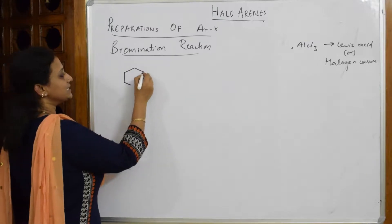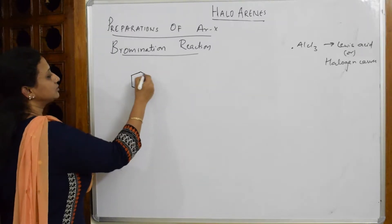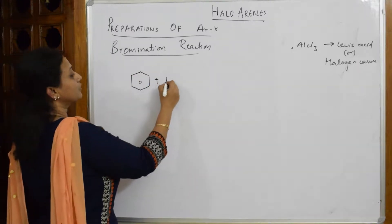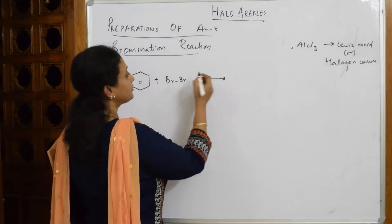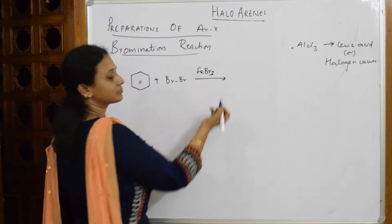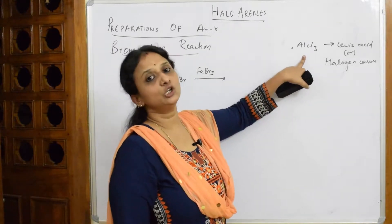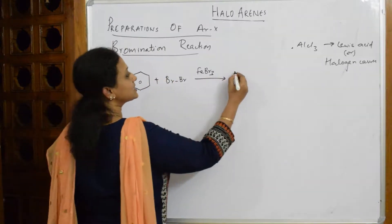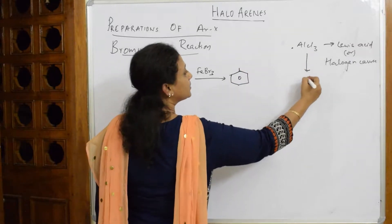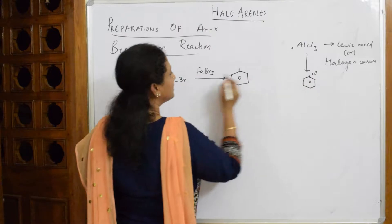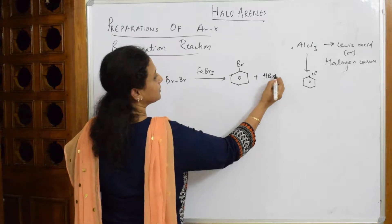Now I have to do the bromination reaction. I pick up one benzene ring and draw it clearly. To this benzene ring I am going to add a bromine atom, because that is what I'm preparing. Then I add FeBr₃. This FeBr₃, just like AlCl₃, is going to act as a Lewis acid.